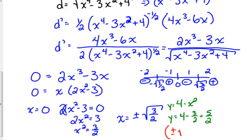So your points are the plus or minus square root of 3 over 2, 5 halves.